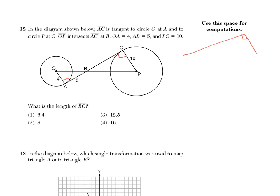OP intersects AC at B and OA is 4, AB is 5, and PC is 10. What is the length of BC? Because I don't know what BC is, I'm going to choose to call it X.